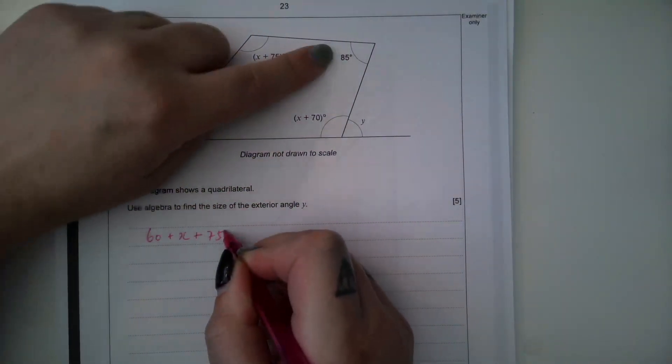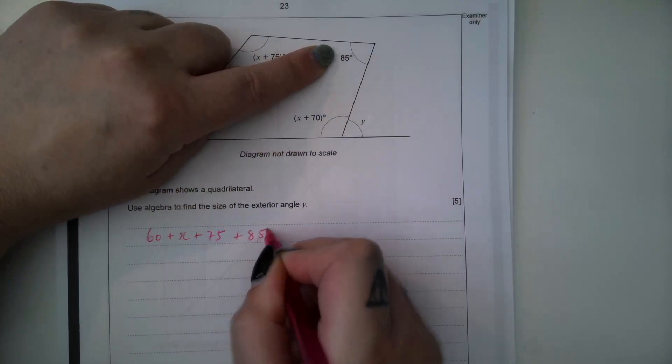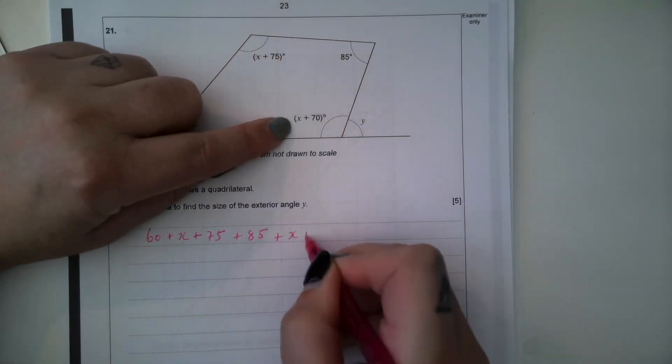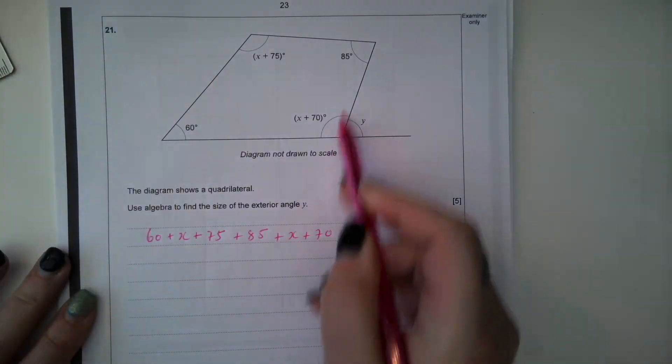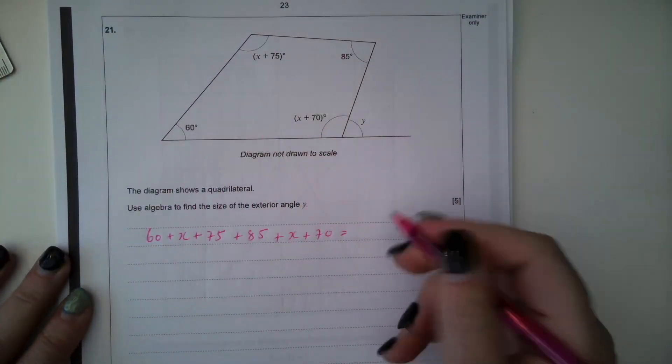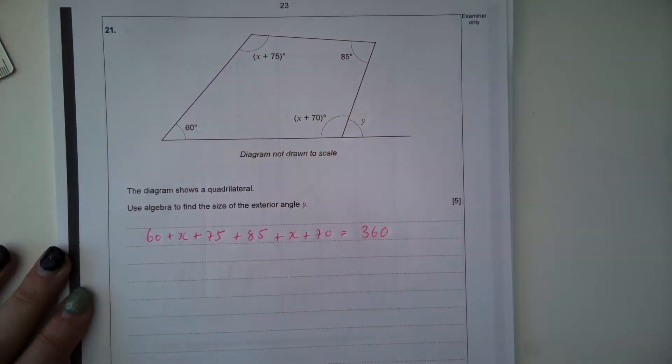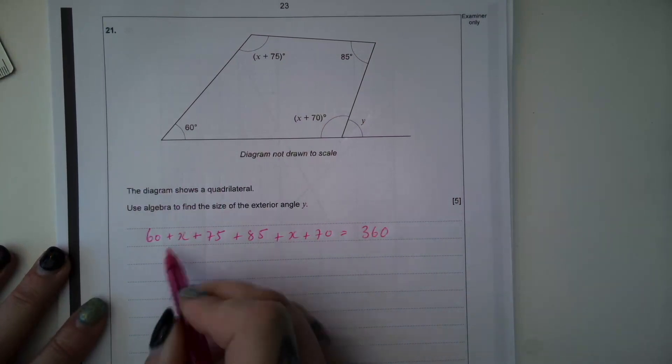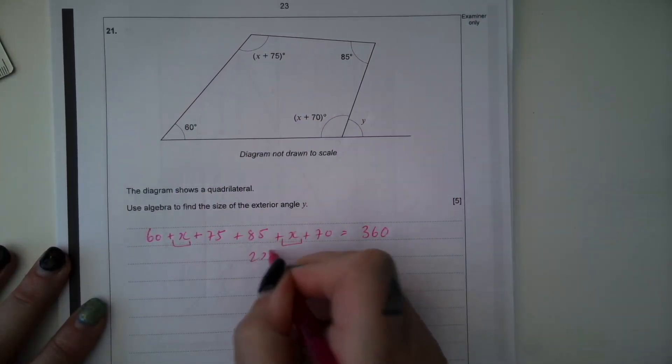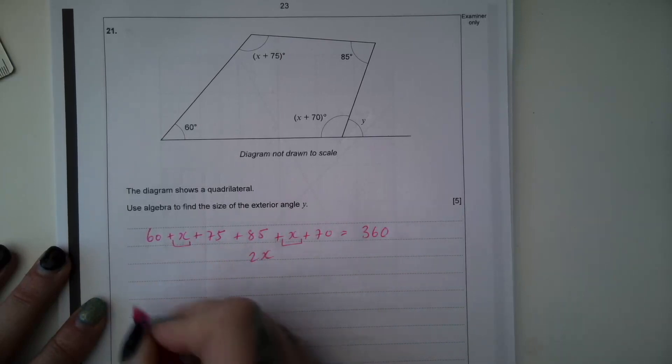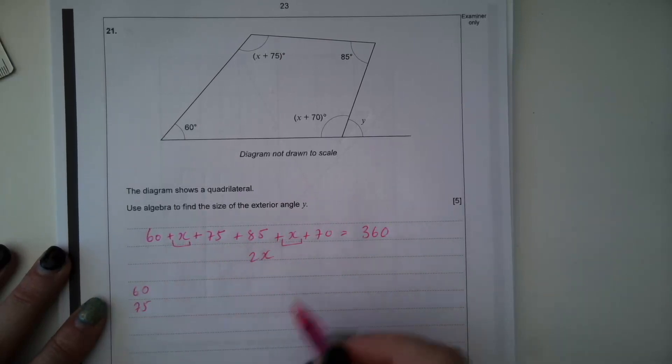So we've got 60 plus X plus 75 plus 85 plus X plus 70. And because it's a quadrilateral, a four-sided shape, they should all add up to 360. So we're going to simplify this. So we've got X plus X. So we have 2X, 60 plus 75 plus 85 plus 70. So that's 10, 8, 16, 23, 29.